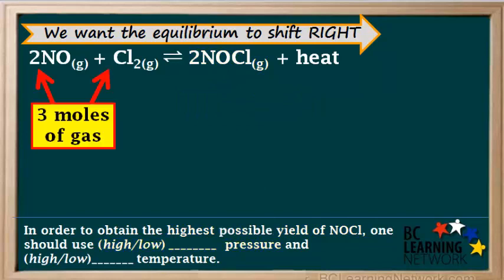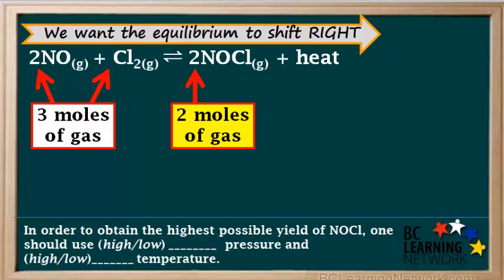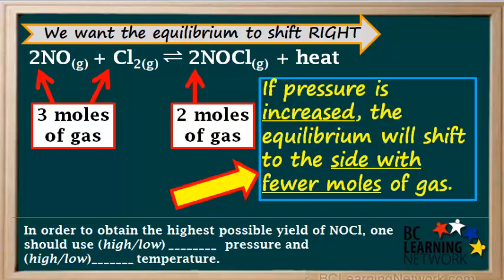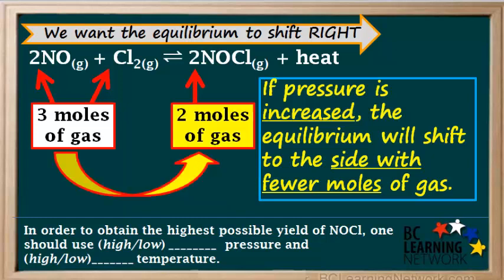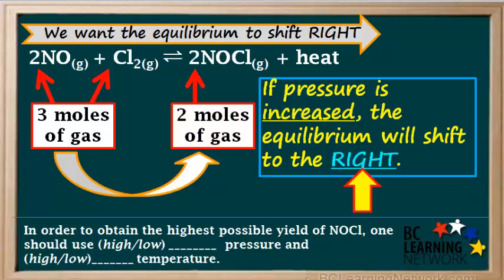First, we look at the effect of pressure. When using Le Chatelier's principle for pressure, we count the number of moles of gas on both sides. The left side has 3 moles of gas, and the right side has 2 moles of gas. According to Le Chatelier's principle, applying a stress of high pressure will cause the equilibrium to counteract this stress by shifting to the side with fewer moles of gas. Since the right side has fewer moles of gas, an increase in pressure will make this particular equilibrium shift to the right.